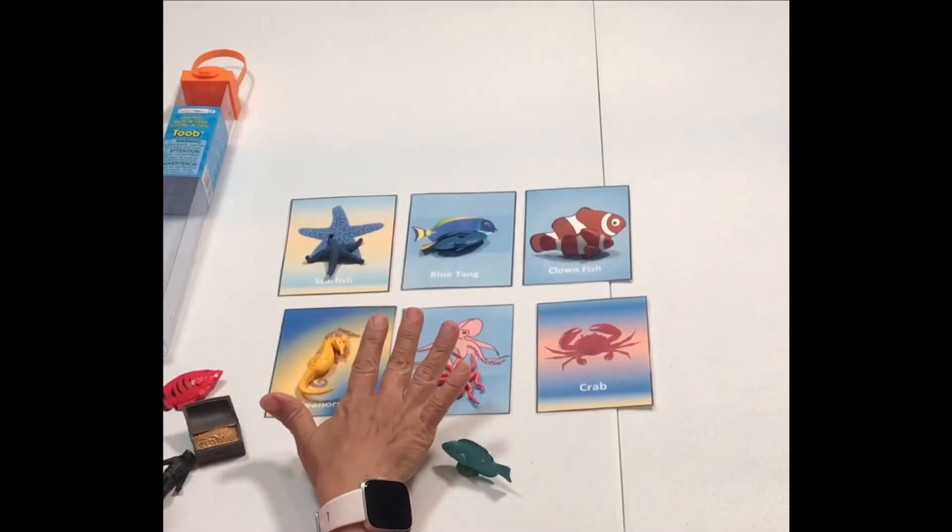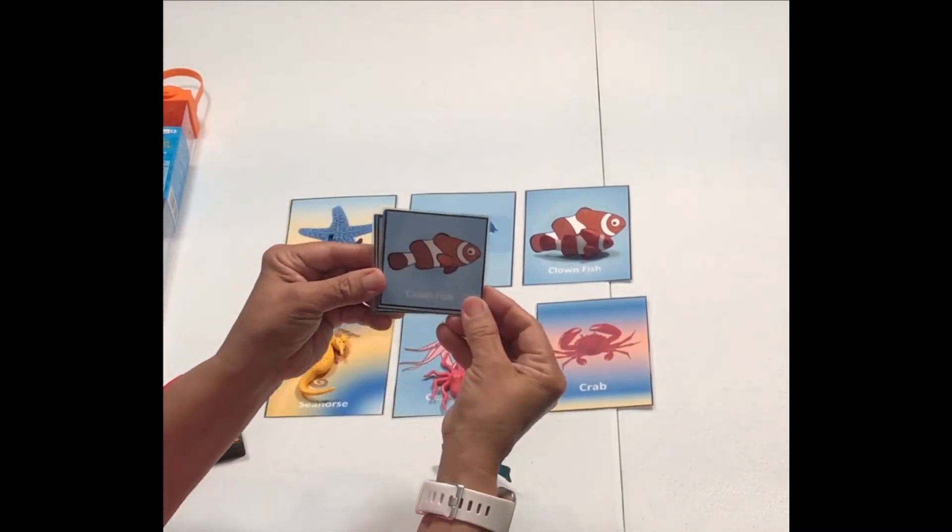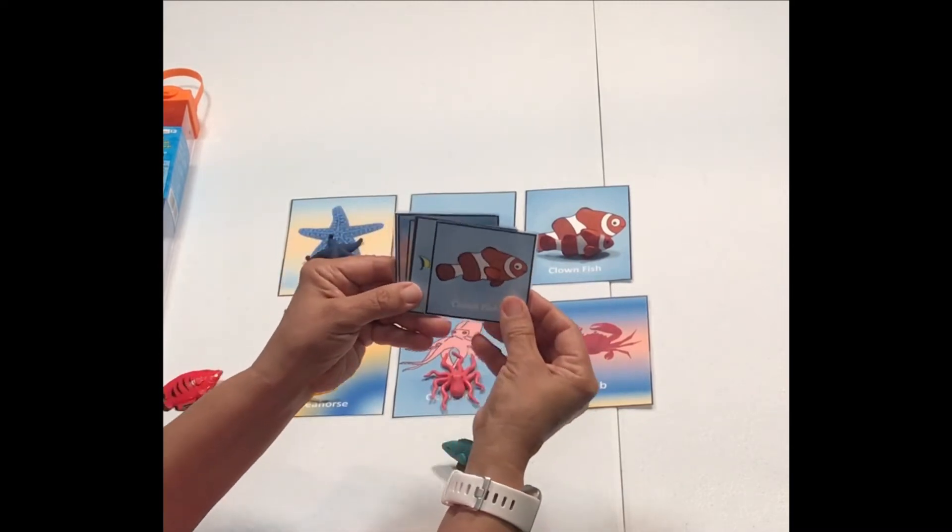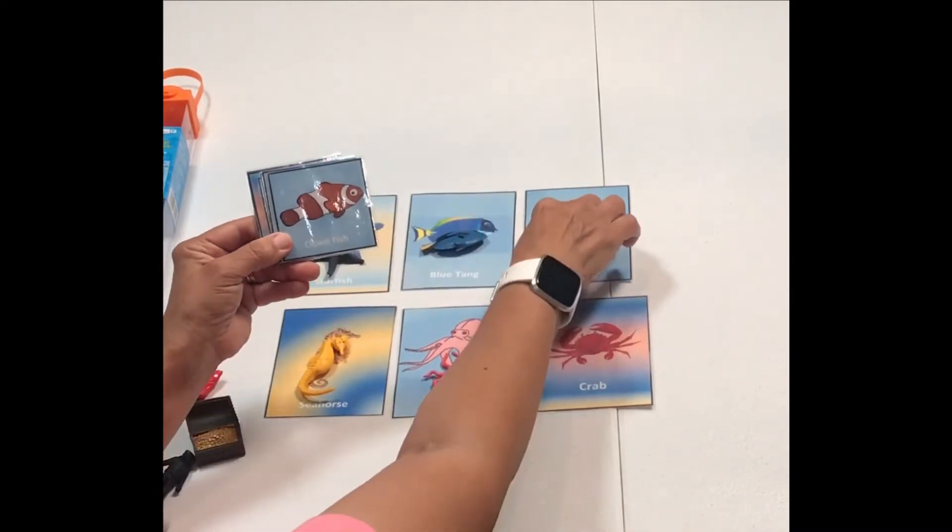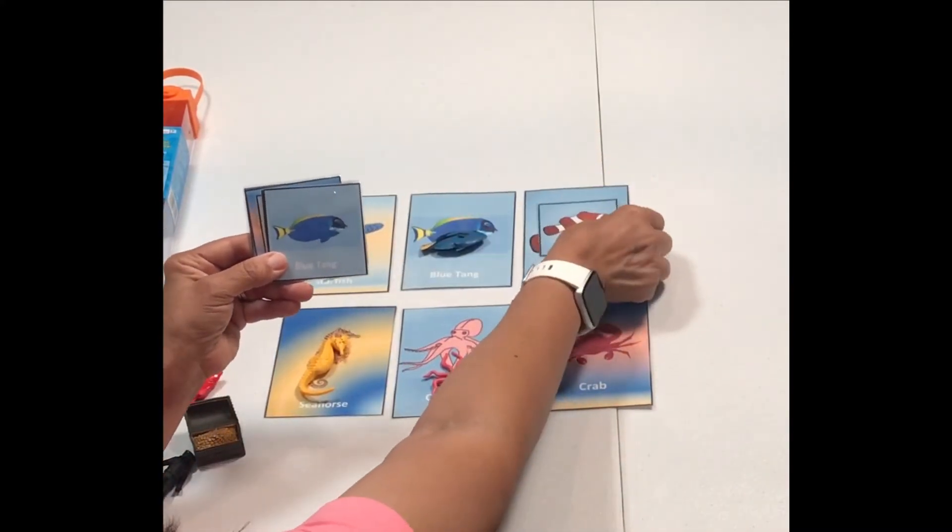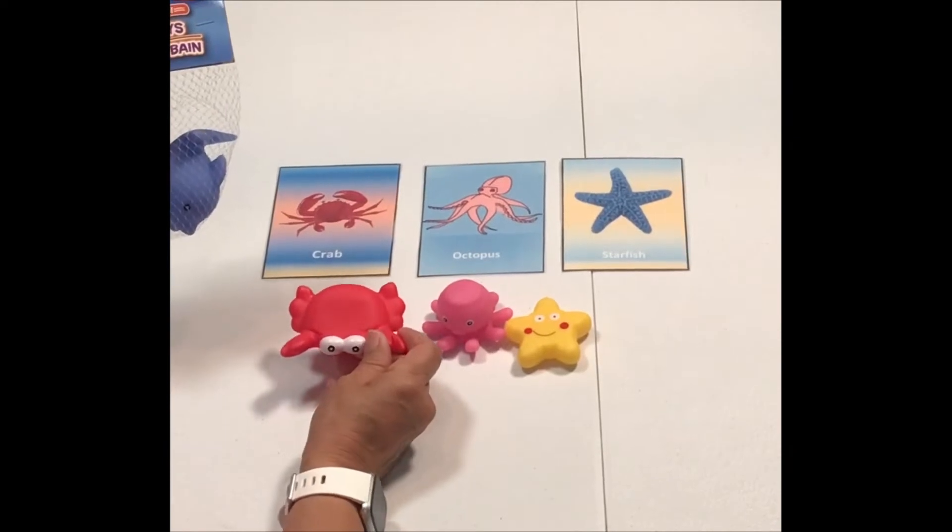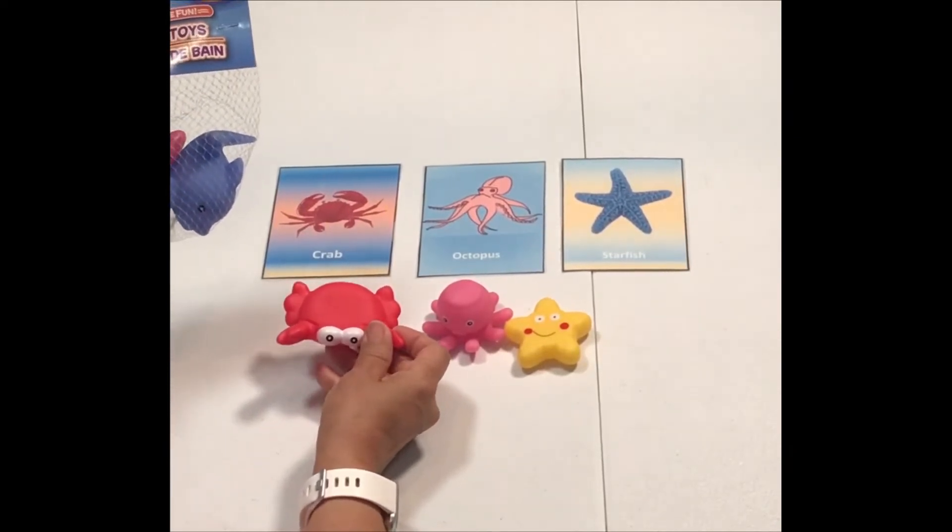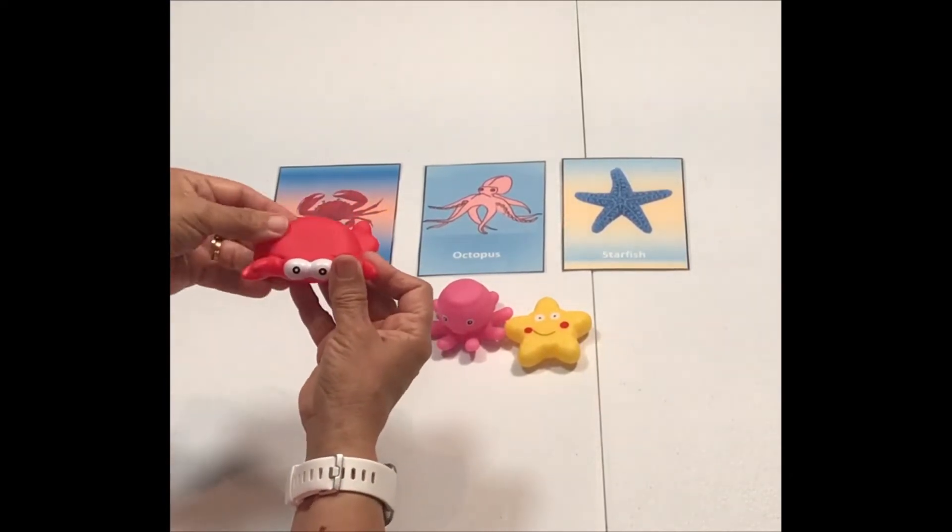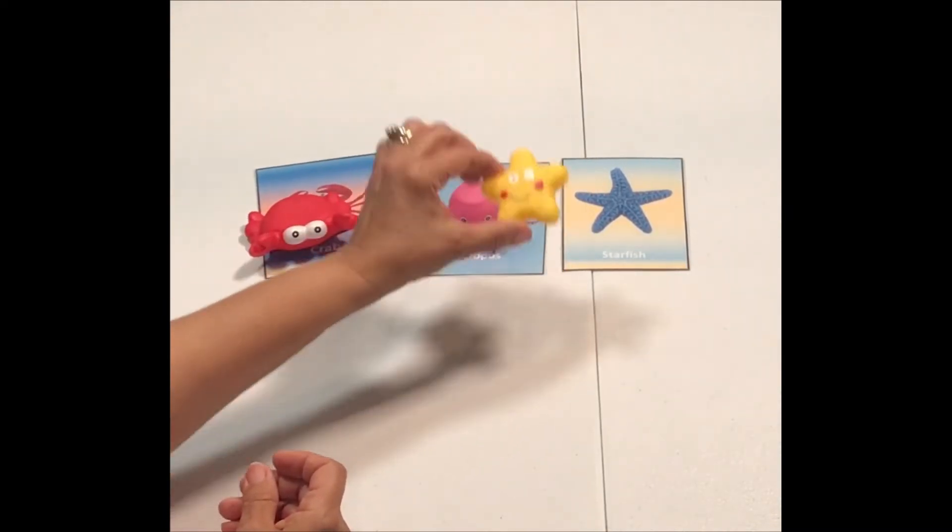But if you don't have the Safari LTD sea animals, I went ahead and made this printable. I'll link the flashcards and the little ones that I made so that your child can match the little cards: clown fish, blue tang, and so on. I always like to encourage you to use whatever you have at home. These are some bath toys from Dollar Tree and so we can match those toys as well: crab, octopus, starfish.